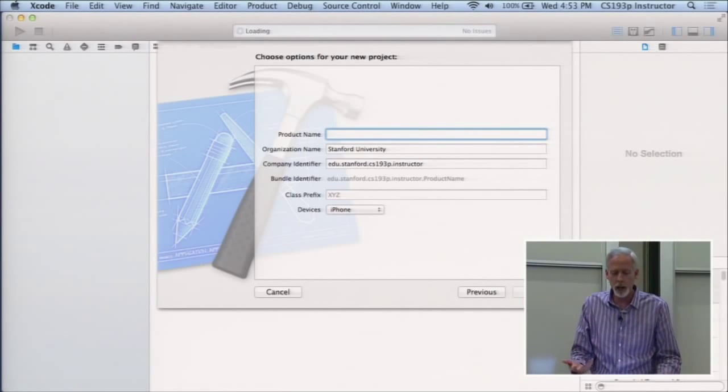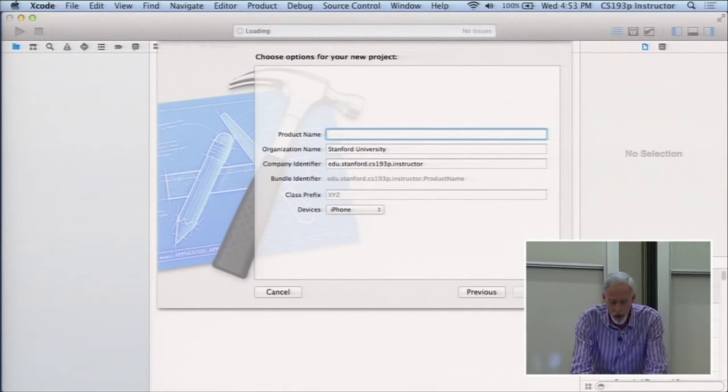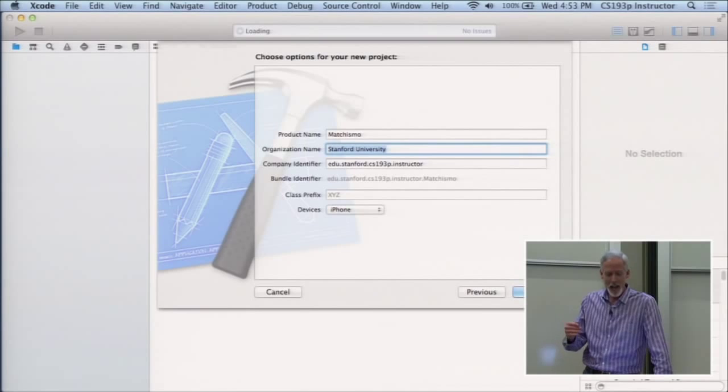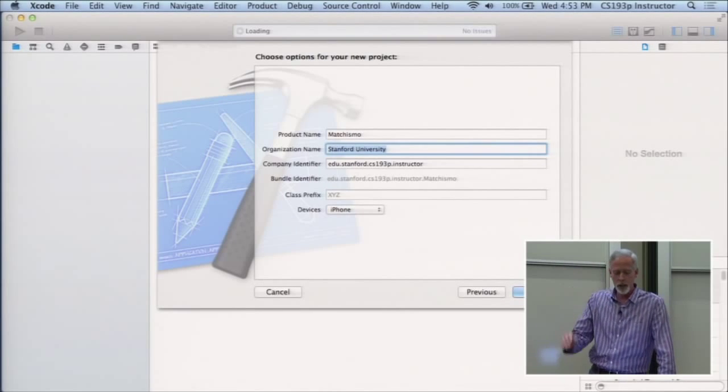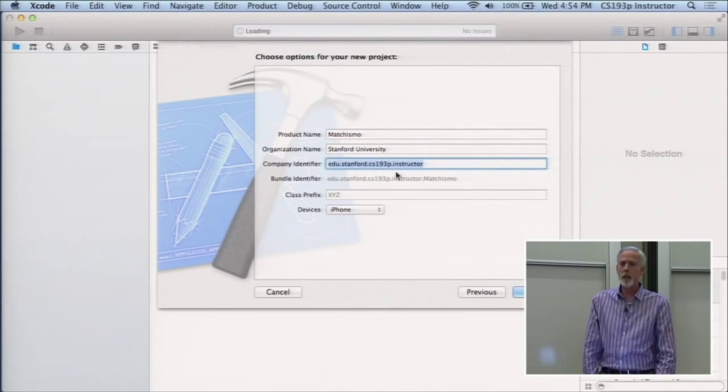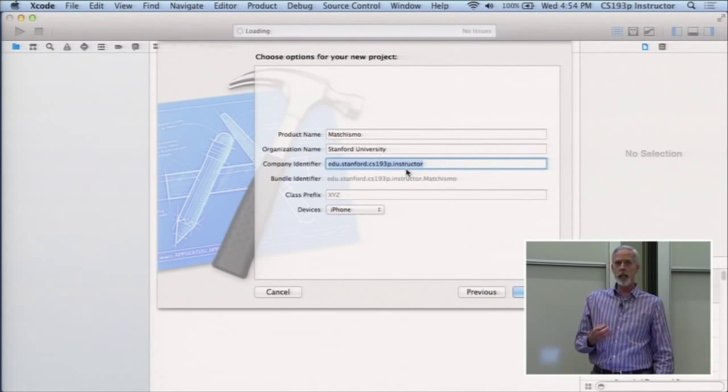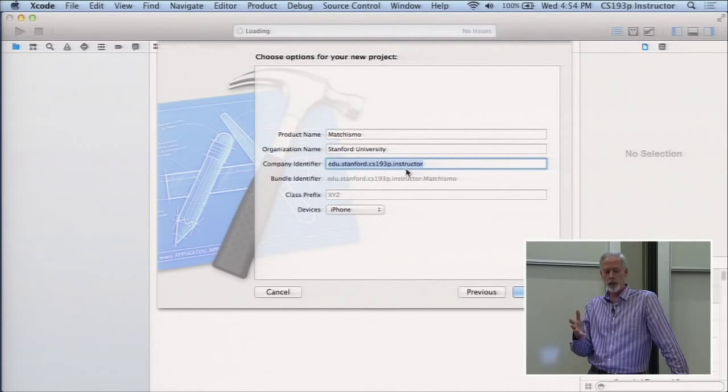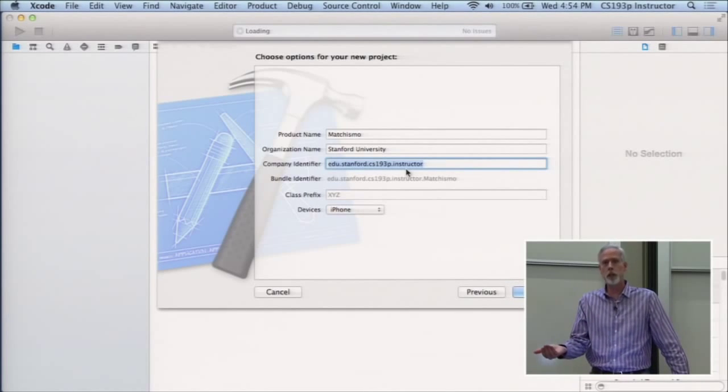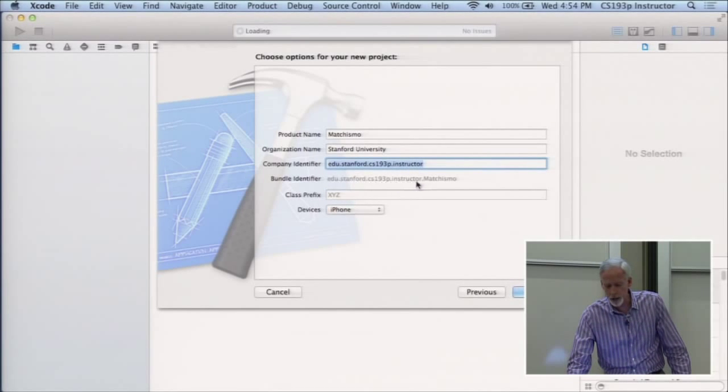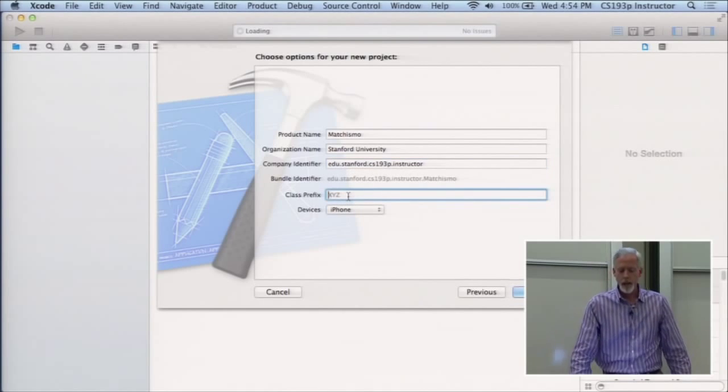And here it's going to ask for some information about it, like what do you want to call this app? This is a card matching game I decided to call Machismo. So that's going to be the name of our app, just for fun. And organization name can be anything you want, it's going to appear in the headers of your, all the classes that you create. So I make mine be Stanford University, you can make it be Bob's Game House or whatever. This identifier should be unique to you. So I have edu.stanford.cs193p.instructor, you might have edu.stanford.cs193p.yoursunetid, that would be completely unique. These reverse DNS is a really good way to create a unique name. And it's going to create a unique name for this app by combining this with the name. So you can see it's done that here, this bundle identifier.